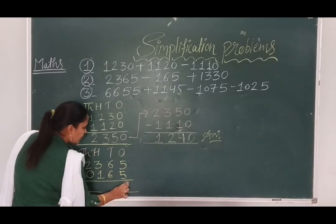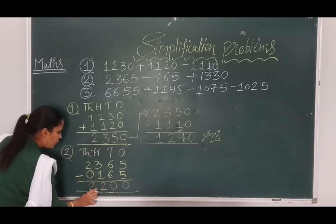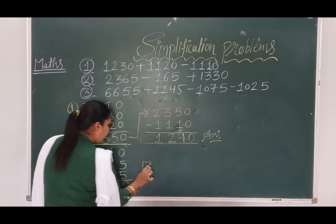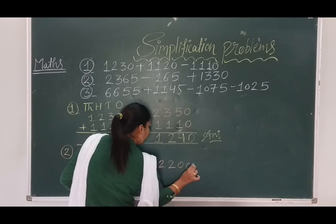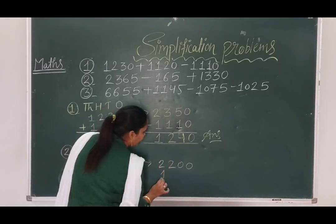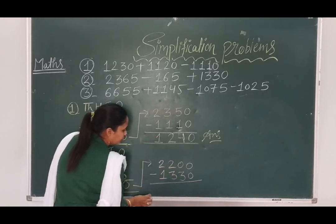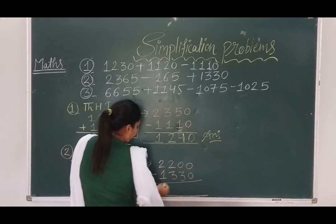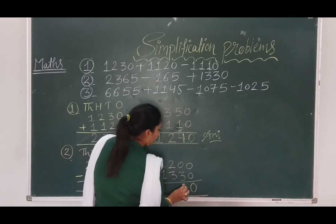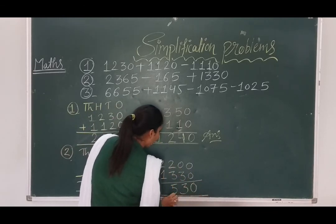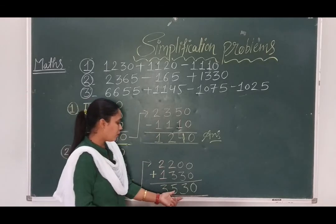Subtraction: 5 minus 5 is 0, 6 minus 6 is 0, 3 minus 1 is 2, 2 minus 0 is 2. We write this answer: 2200. Then we add the third digit, 1340. Addition: 0 plus 0 is 0, 3 plus 0 is 3, 2 plus 3 is 5, 2 plus 1 is 3. So our answer to this question is 3530.